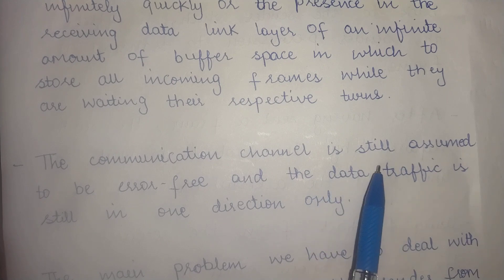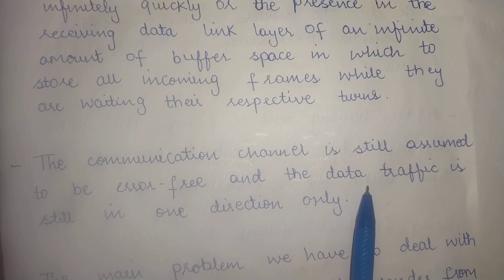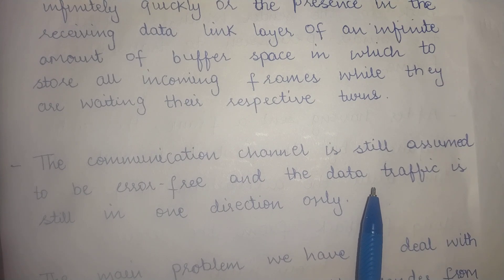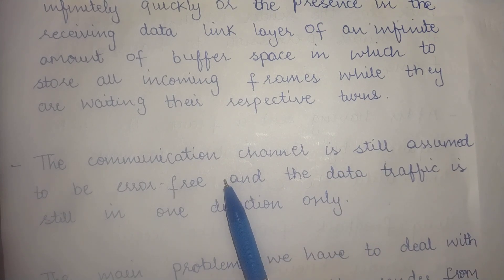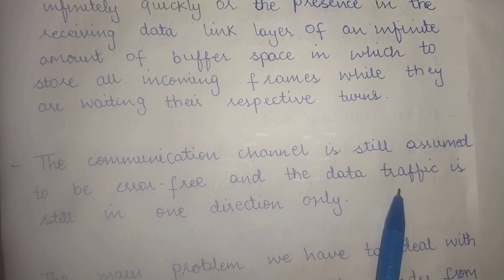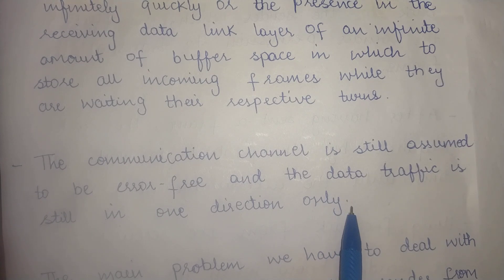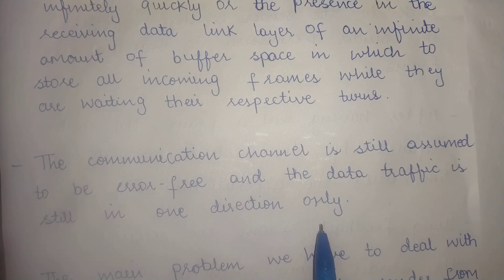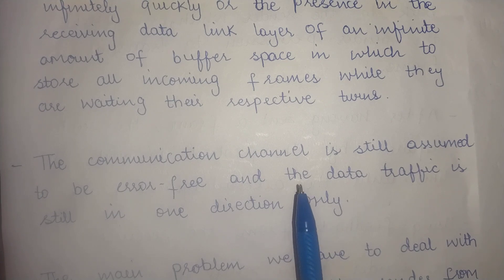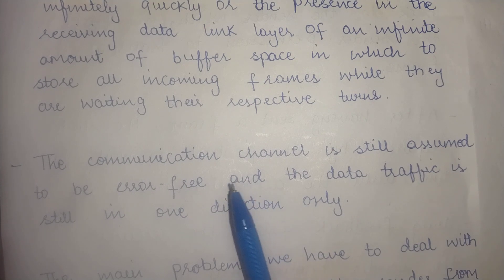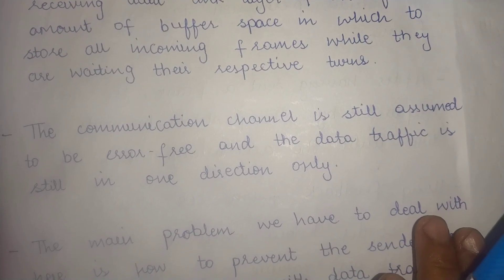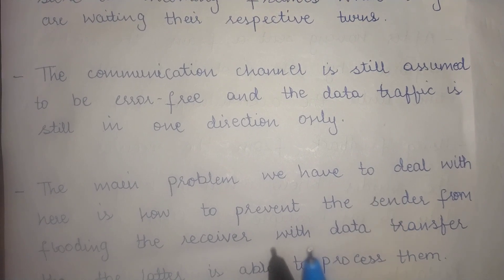The communication channel is still assumed to be error free, continuing the same assumption from the unrestricted simplex protocol. The stop and wait protocol also assumes that data traffic is simplex — that is, in one direction only — just as in the unrestricted simplex protocol. At any given point in time, the receiver can only receive data and the sender can only send data.